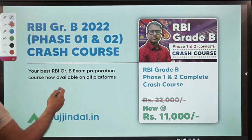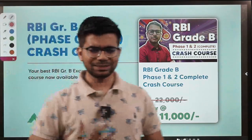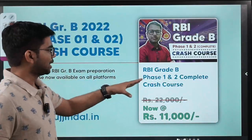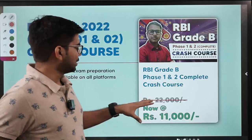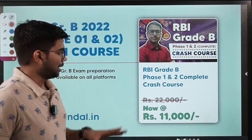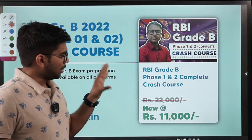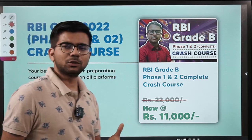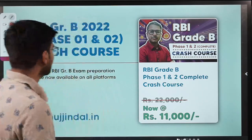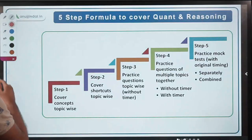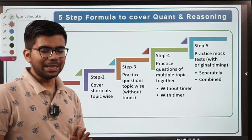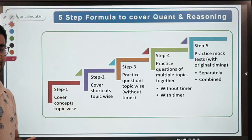We have launched a crash course for RBI Grade B Phase 1 and Phase 2 complete, currently available at a discounted price of rupees 11,000. If you want to know the details of this course, you can call our helpline number available on our website. Now let us start with the procedure or the formula to cover content reasoning and how to score high marks in content reasoning.